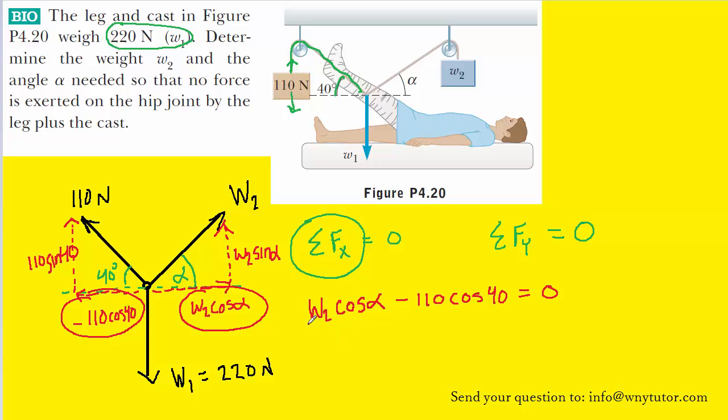Now unfortunately, this equation contains two unknowns, both w2 and alpha, so we can't yet solve for either one. But one thing we could do is add 110 cosine of 40 to both sides of the equation in order to solve for w2 cosine alpha.